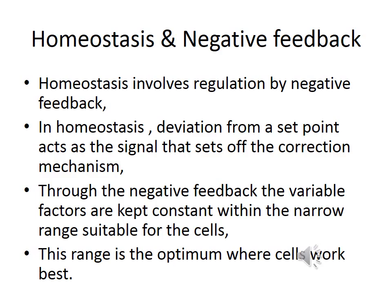To be able to maintain a constant internal environment, there is need for regulation and this is achieved by use of negative feedback. In all instances, any deviation from a set point acts as a signal that sets off the correction mechanism. Through negative feedback, the variable factors are kept constant within the narrow range suitable for the cells. This narrow range is known as the optimal, where the cells work best.